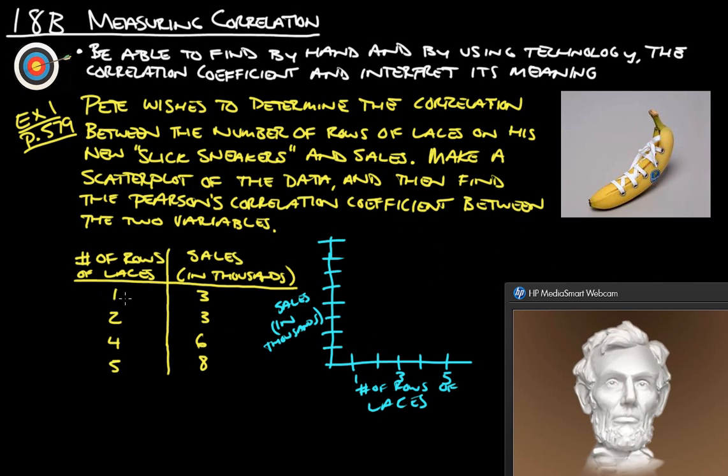All right, so first one is at one and three, and then we have two and three, four and six, it's about right there, and then five and eight. So there's our scatterplot. So it looks like the data roughly follows a straightish line there.